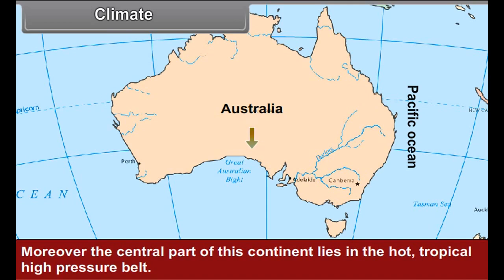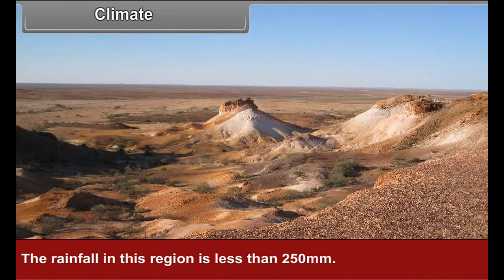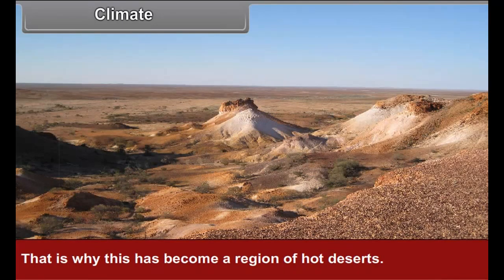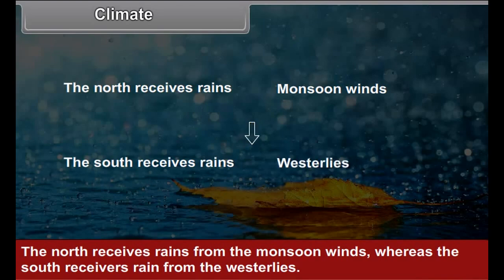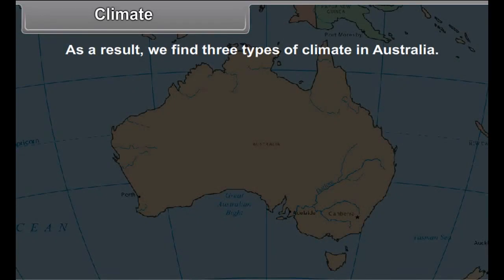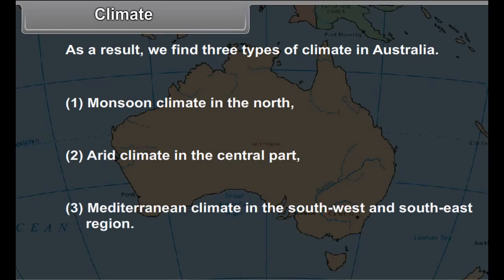Moreover, the central part of this continent lies in the hot tropical high pressure belt, hence winds blow outward from this region. Consequently, this region remains dry with rainfall less than 250 millimeters, which is why it has become a region of hot deserts. The north receives rains from the monsoon winds, whereas the south receives rain from the westerlies. As a result, we find three types of climate in Australia: monsoon climate in the north, arid climate in the central part, and Mediterranean climate in the southwest and southeast.